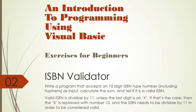We calculate the sum because a valid ISBN is divisible by 11, unless the last digit is an X. If that's the case, the X is replaced with the number 10, and then the sum of all these numbers would be divisible by 11 if it's a valid ISBN.